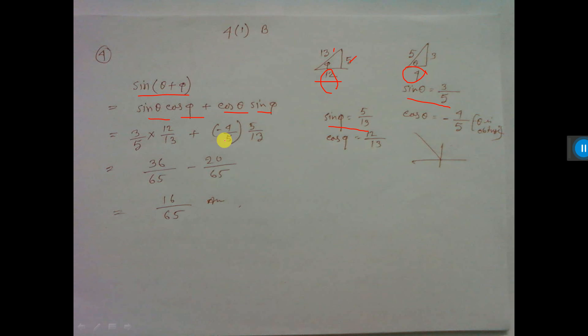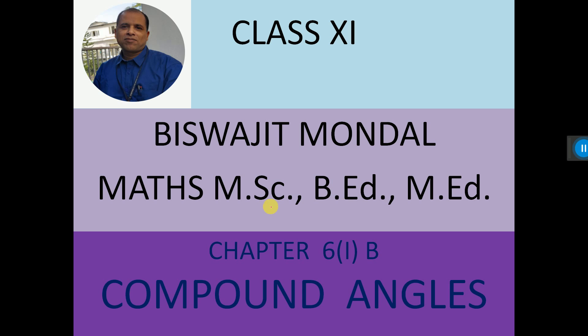Here a is θ, b is φ. Now θ, sin θ value you find from here, perpendicular by hypotenuse. Cos φ, find here, base by hypotenuse, 12 by 13. Similarly, cos θ from here and sin φ from here. Put the value and calculate. You will get the answer. So that's all for this video.